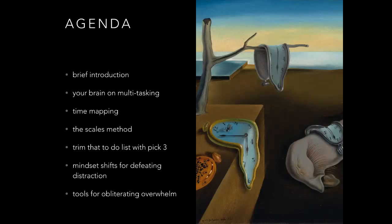When we get to the time mapping section, I'm going to teach you two methods: the bucket method and weekly plans. I'll teach you the scales method for prioritization, show you how to trim your to-do list by picking three priorities, teach some mindset shifts for defeating distraction, and share my favorite tools for obliterating overwhelm. I love alliteration — it actually helps us remember when we use fun phrases that are easy for our brain to grasp.